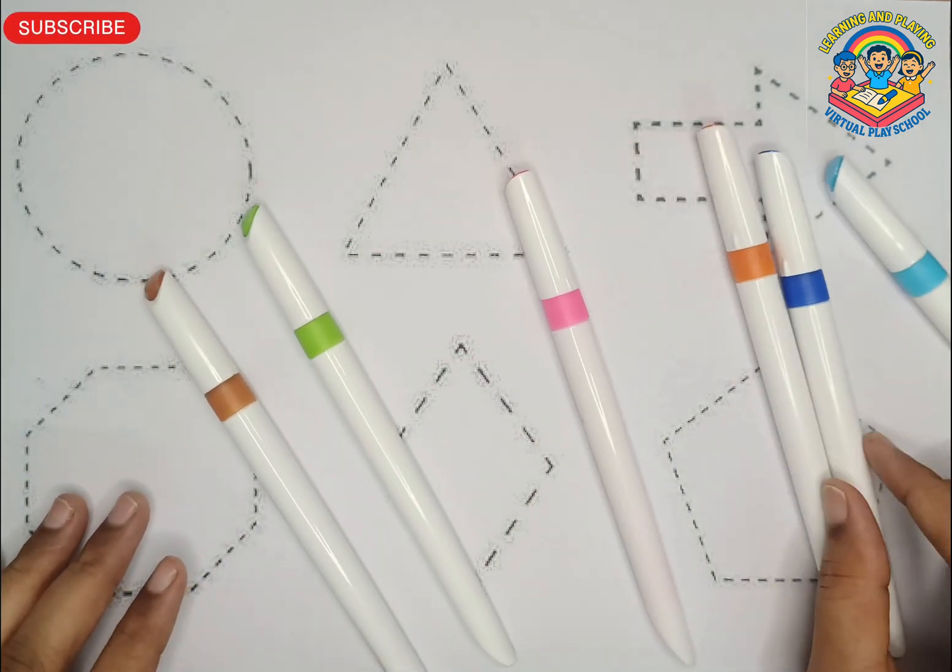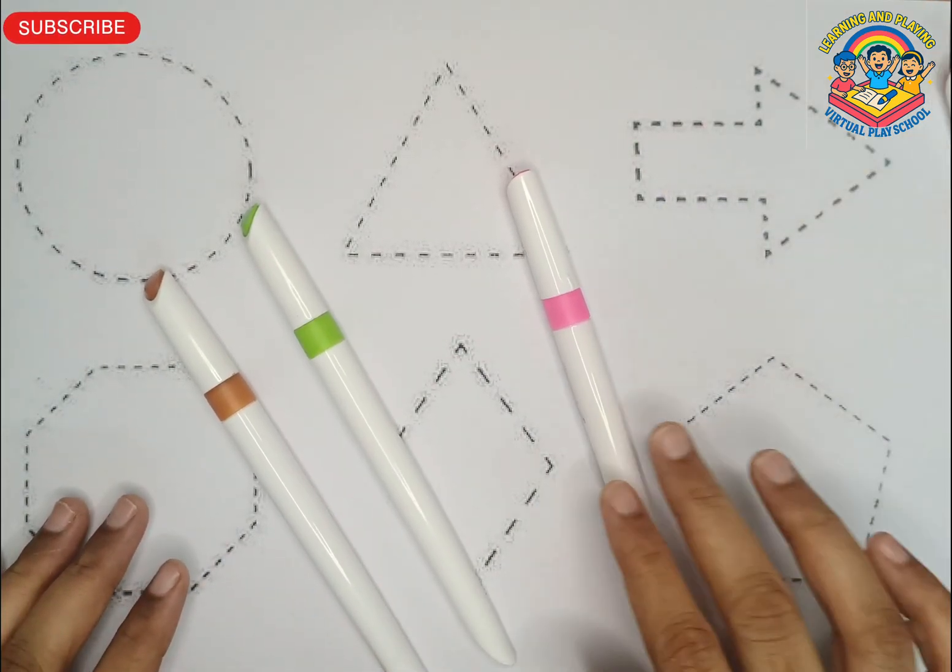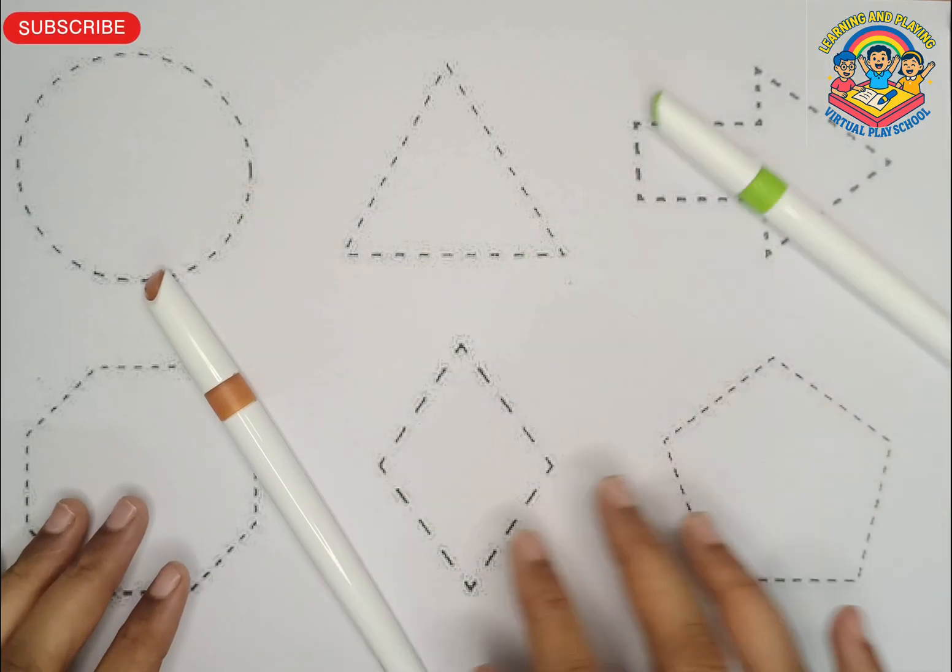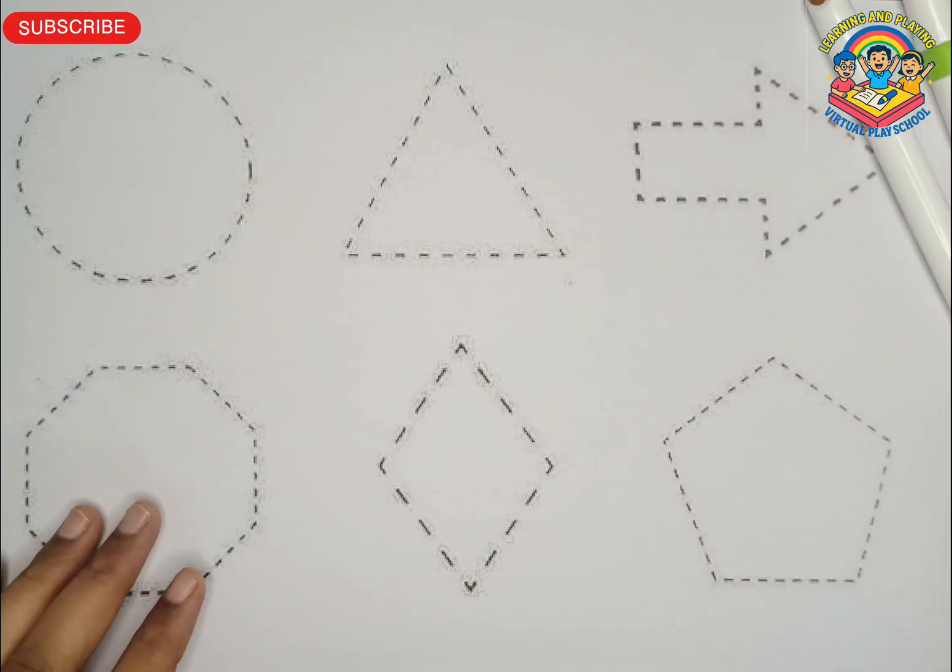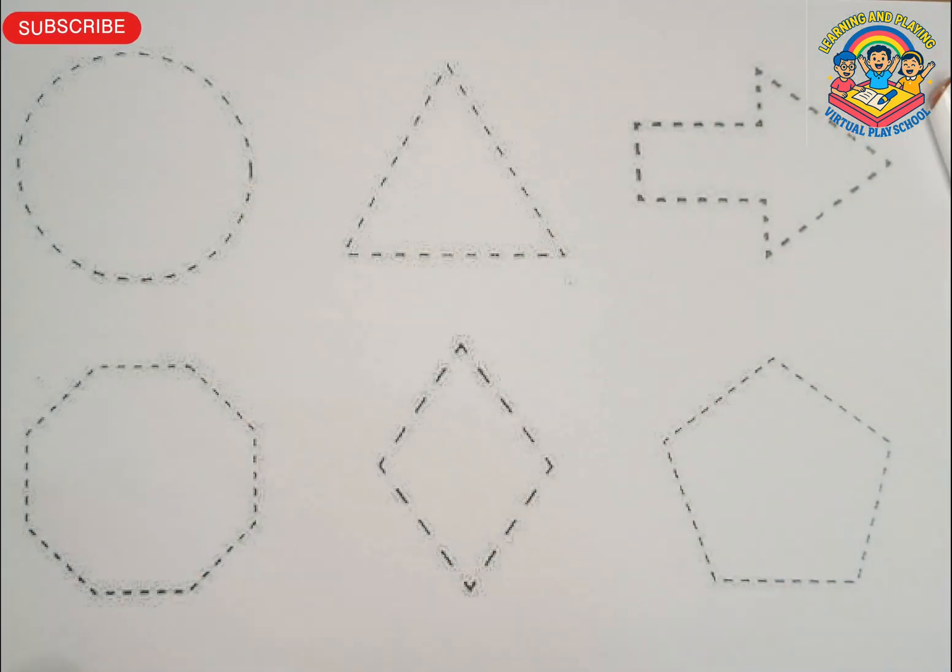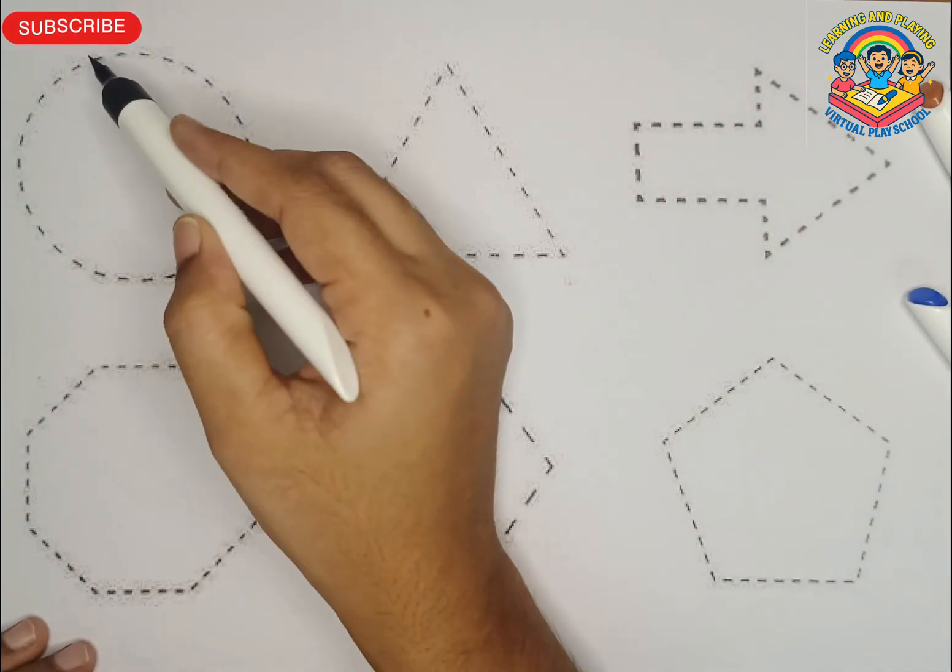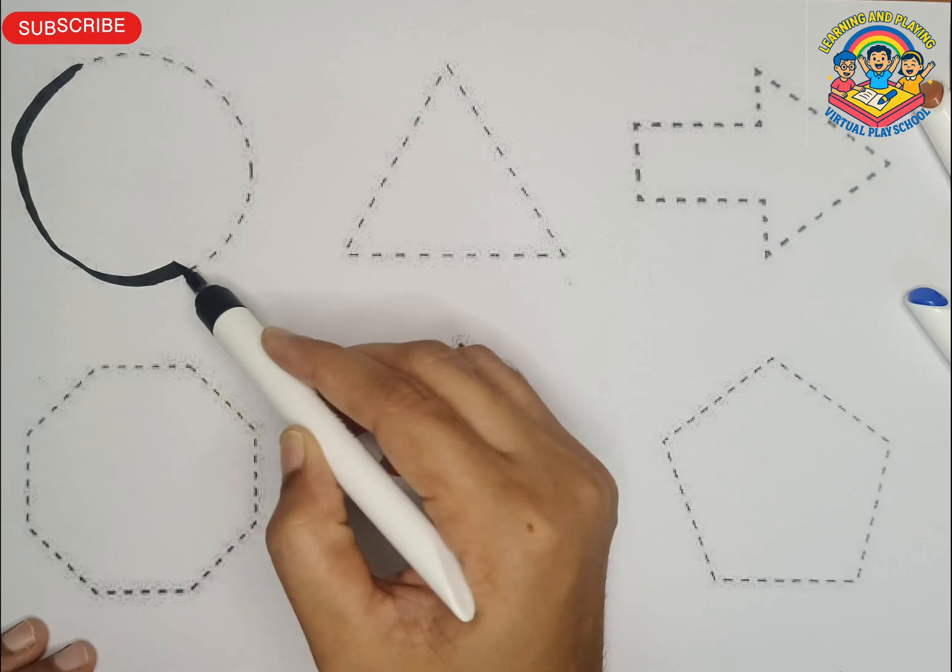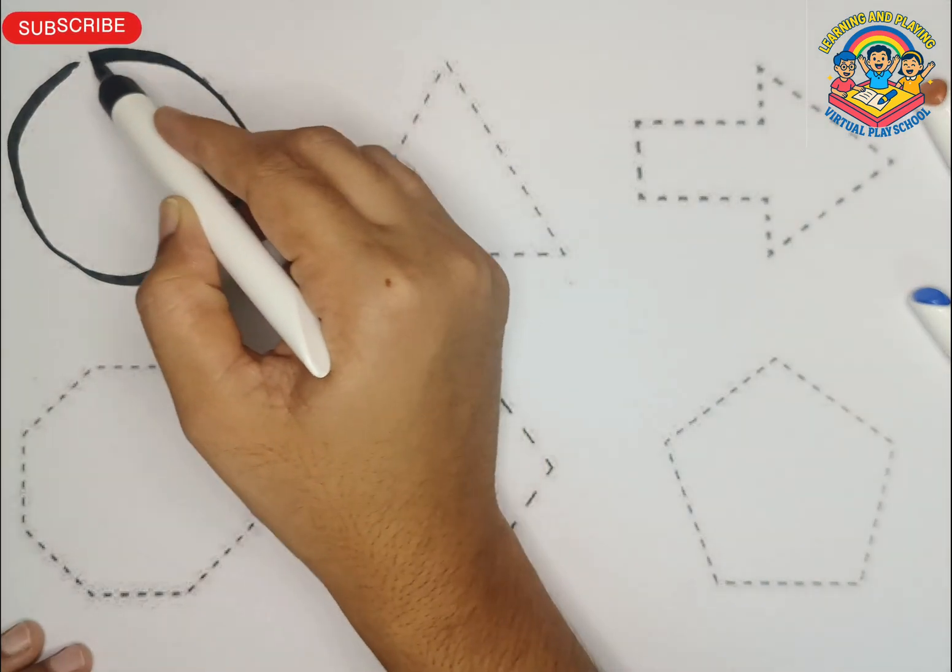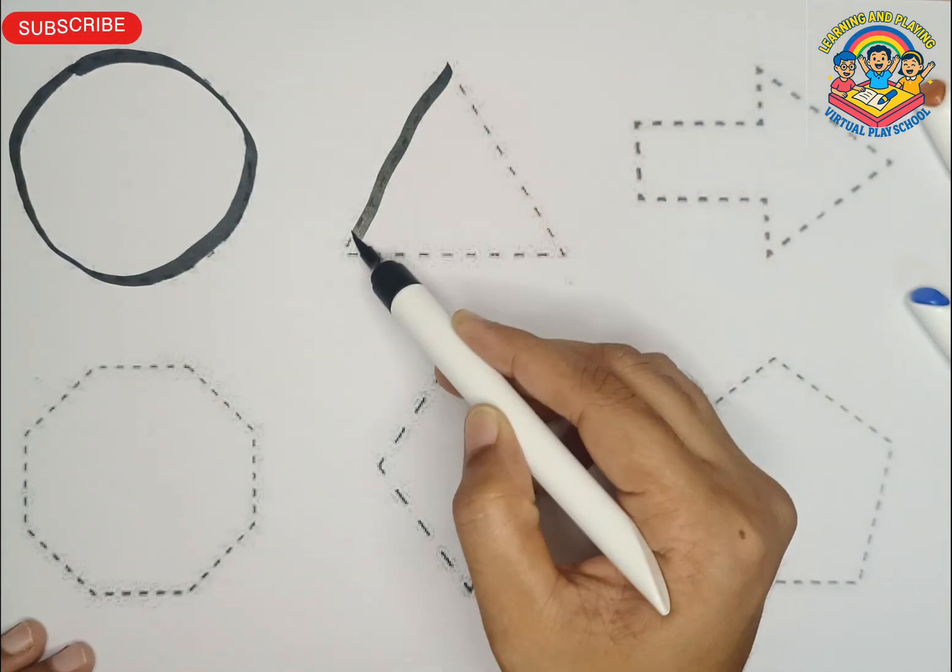Shapes like blue color, orange color, pink color, green color, brown color. Let's start the video. Circle, triangle.